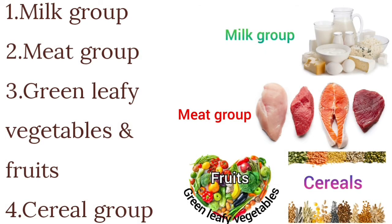There are mainly four basic food groups. One is the milk group, which includes milk and milk products. The second is the meat group, which includes meat, fish, eggs, pulses or beans, nuts, etc. The third is the green leafy vegetables and fruit group. The fourth is the cereal group, which includes bread, rice, wheat, and barley.